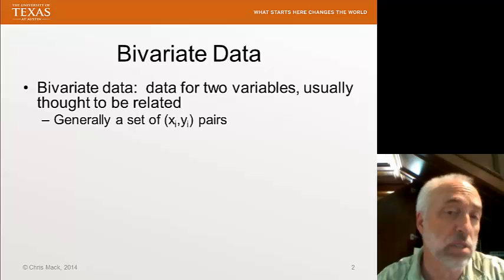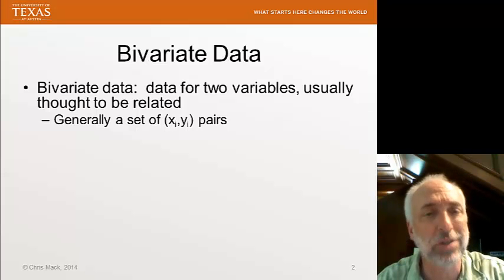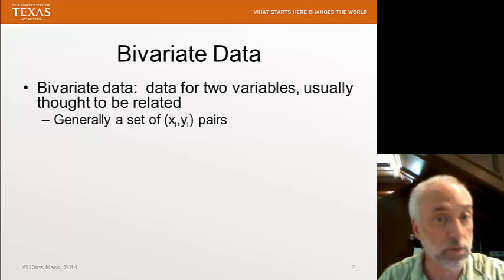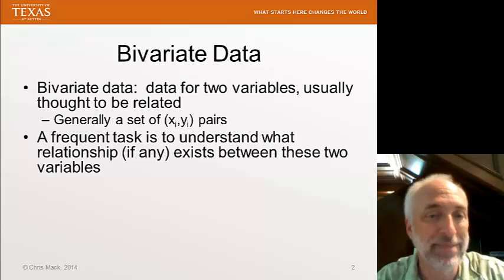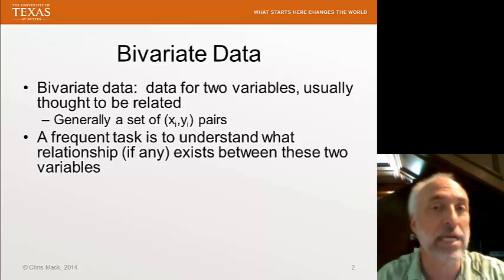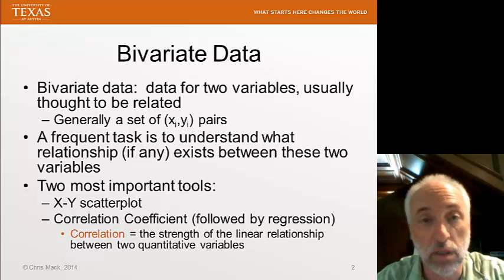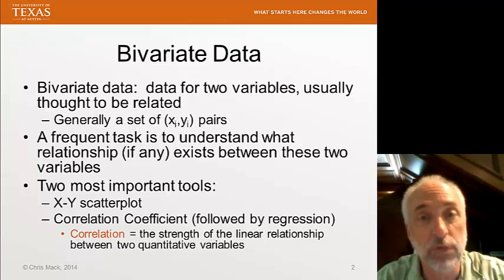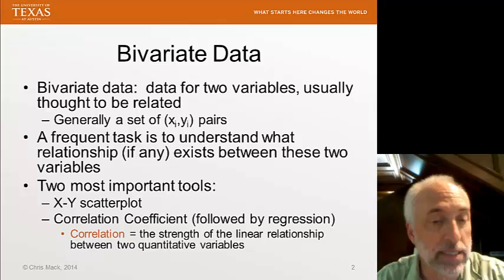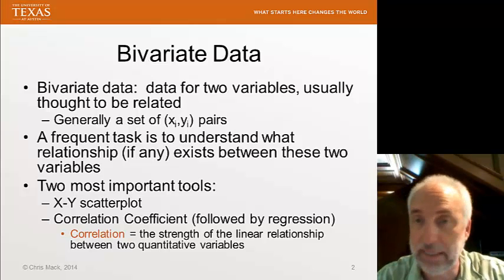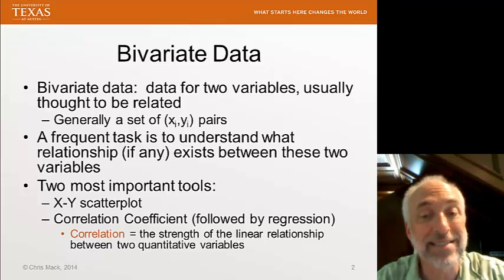Of course, sometimes these things won't have any correlation to each other and discovering whether there's any relationship between the two pieces of data in the pair is part of what we're up to in the next few lectures. A frequent task is to understand if there's any relationship between these two variables and if there is, what's the nature of that relationship. We have two very important tools that we use: the X-Y scatterplot, which I think everyone knows, and the other is regression, including the calculation of a correlation coefficient. That's the topic of today's lecture. Correlation is defined as the strength of the linear relationship between two quantitative variables.